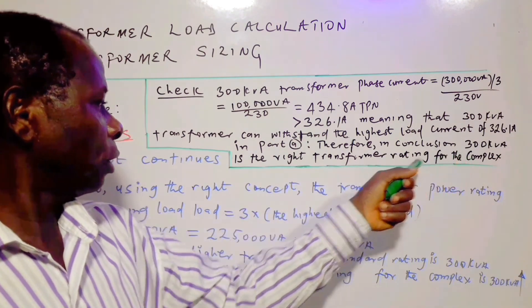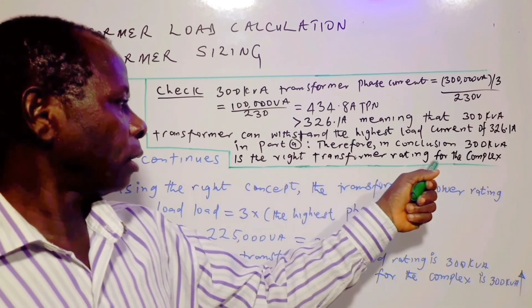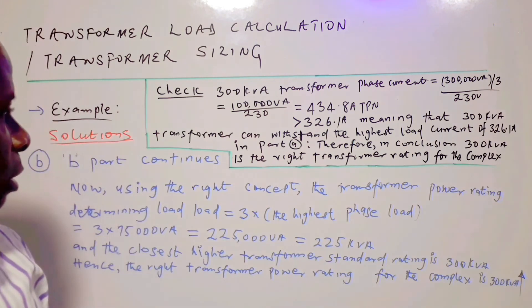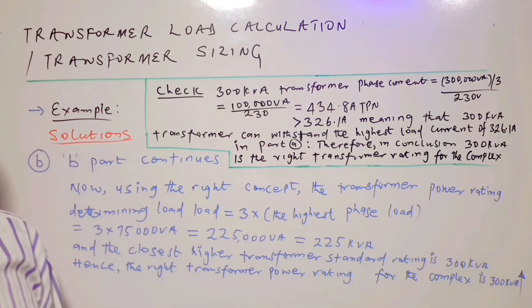Therefore, in conclusion, 300 kVA is the right transformer power rating for the complex, just as we said earlier.